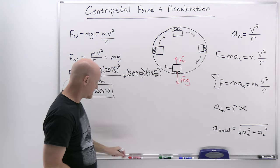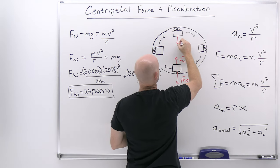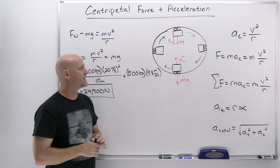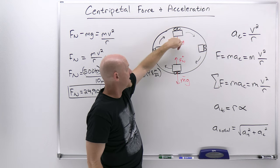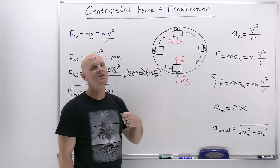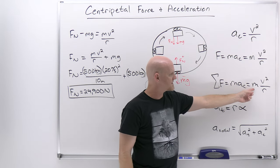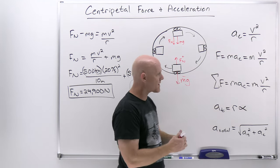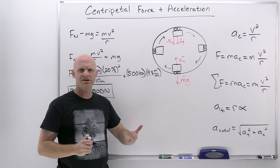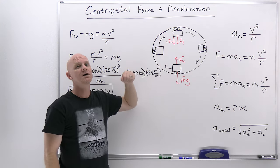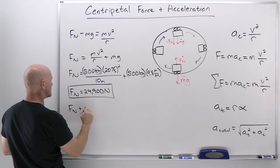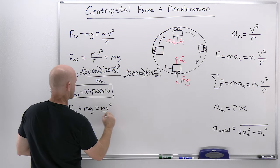Now for the top of the loop-de-loop: set up the free body diagram. Your weight still points down — that hasn't changed. But now the normal force also points down, because the track is above the car and the normal force is always the perpendicular contact force. So both weight and normal force point down, but crucially they both point toward the center of the circle. With my convention — toward center positive — both are positive.